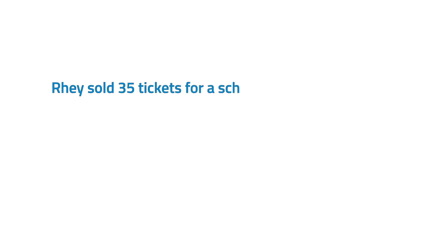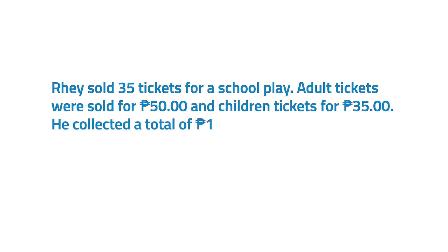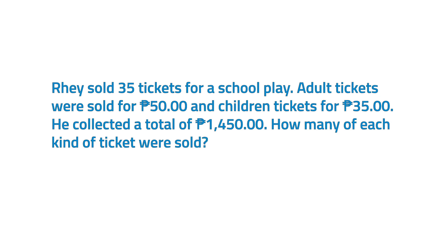Are you ready, kids? Come on and let us begin our number-full journey. Let's try to answer the problem earlier. Ray sold 35 tickets for a school play. Adult tickets were sold for 50 pesos and children's tickets for 35 pesos. He collected a total of 1,450 pesos. How many of each kind of ticket were sold?